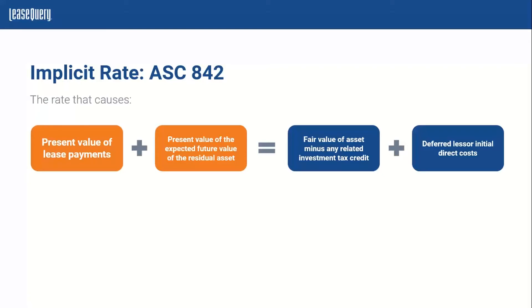In addition to that, the rate must cause the present value of the payments plus the present value of the expected future residual value of the asset — the value expected at the end of the lease term — to equal the fair value of the asset. This is unique to ASC 842, minus any related investment tax credit, which means those tax credits are taken out of the fair value. The deferred initial direct costs refer to things like legal fees and administrative costs that would not have been incurred if the lease hadn't existed.